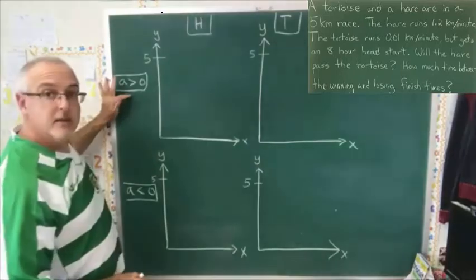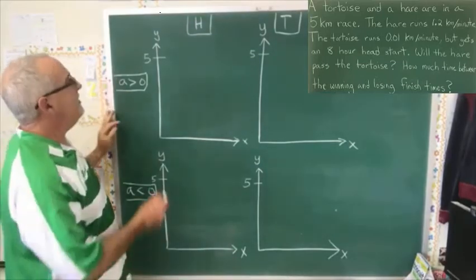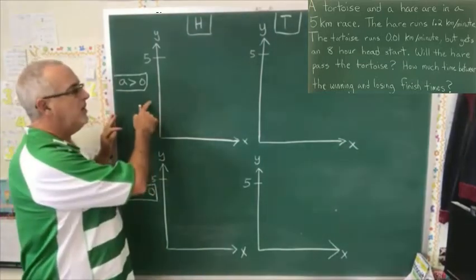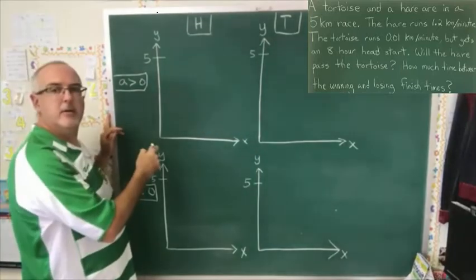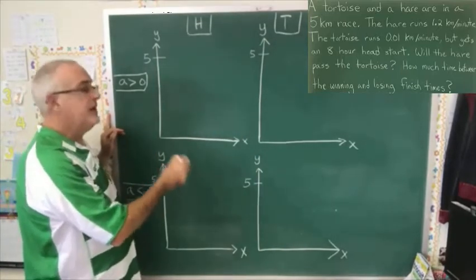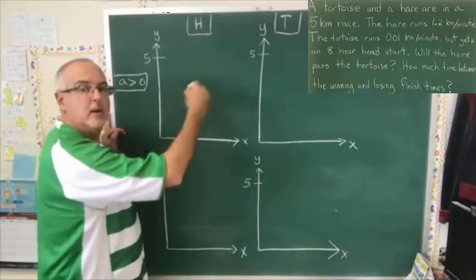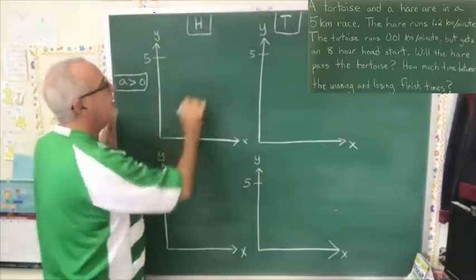With the positive slopes, we defined our y-axis as the number of kilometers covered. So as time goes by, more kilometers have been covered, so the line will tilt upwards.